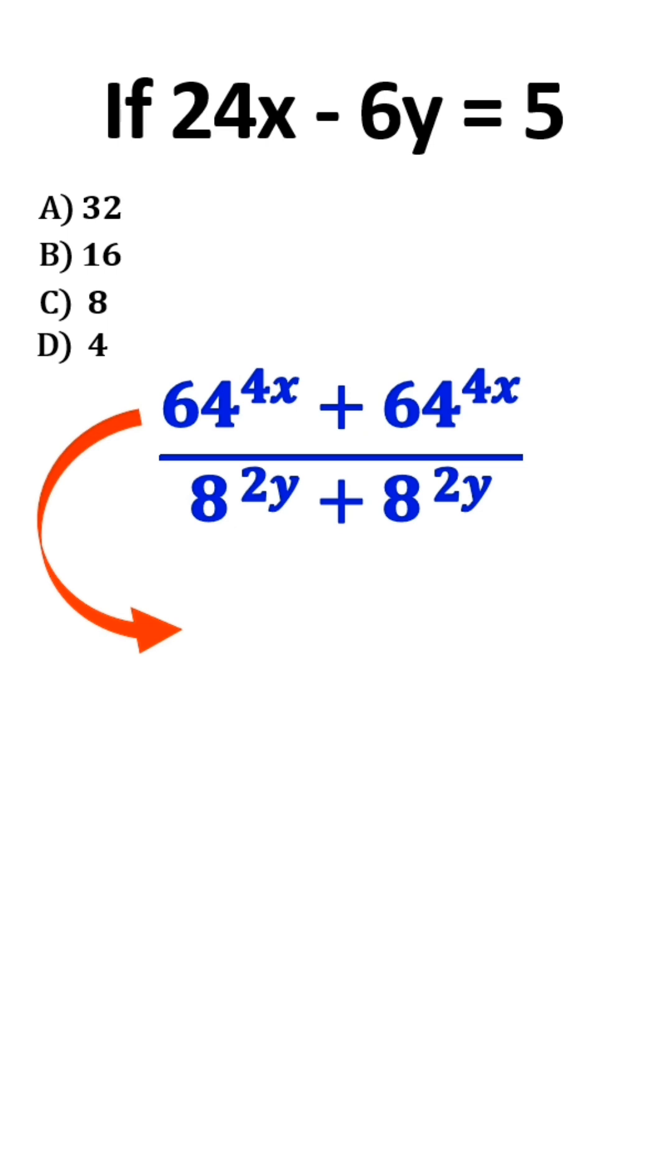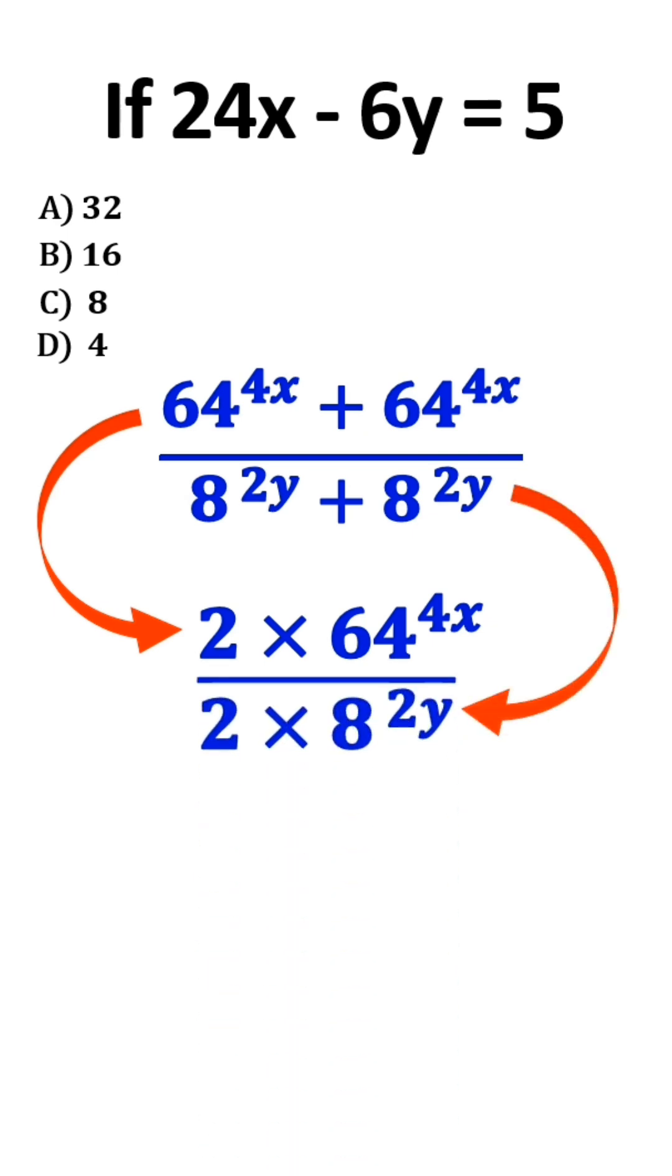First, let's look at the numerator. We can rewrite it as 2 times 64 to the power of 4x. And we rewrite the denominator as 2 times 8 to the power of 2y.